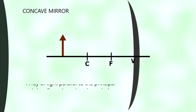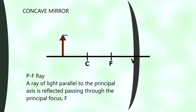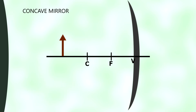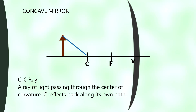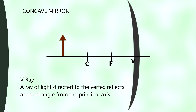These are the four principal rays for a concave mirror. First, a ray of light parallel to the principal axis is reflected passing through the principal focus. Second, a ray of light passing through the focus is reflected parallel to the principal axis. Third, a ray of light passing through the center of curvature reflects back along its own path. Fourth, a ray of light directed to the vertex reflects at an equal angle from the principal axis.